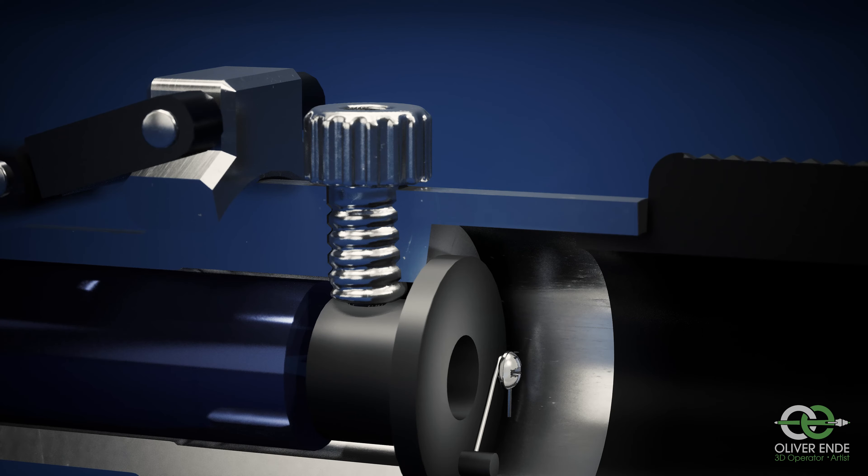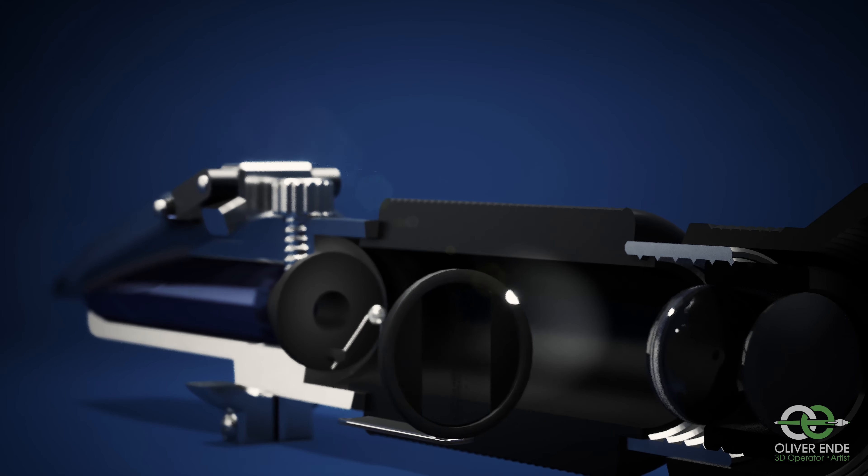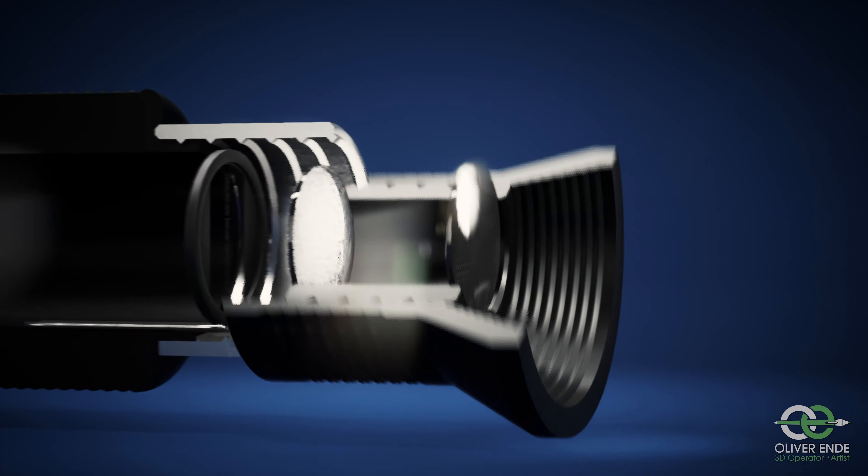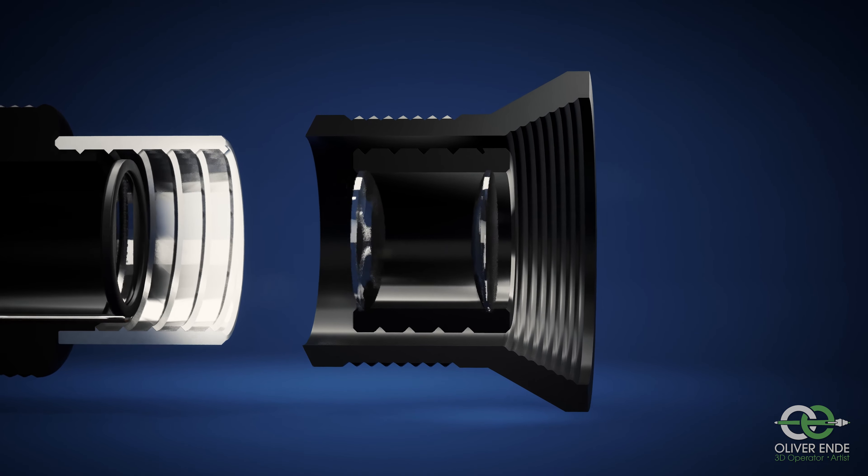Behind the prism is the calibration screw. Behind it is the thin disc with the measuring scale. At the back is the eyepiece with two lenses in it for focus adjustment.